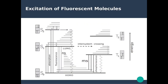Let's first look at a fluorescent molecule and the excitation process. This shows the electronic state configuration of a fluorescent molecule. The electronic state at the lowest energy is the ground state, called the HOMO — the highest occupied molecular orbital. This ground electronic state is also subdivided into vibrational sub-levels of the molecule.